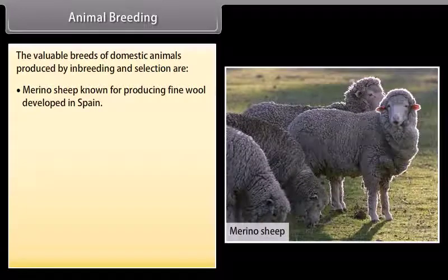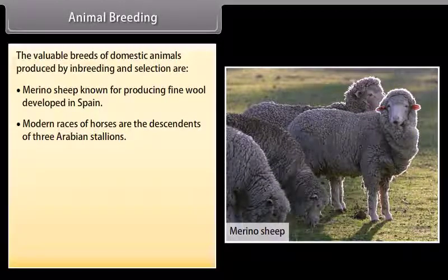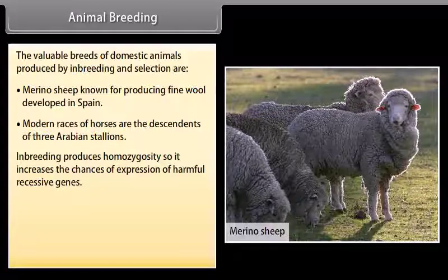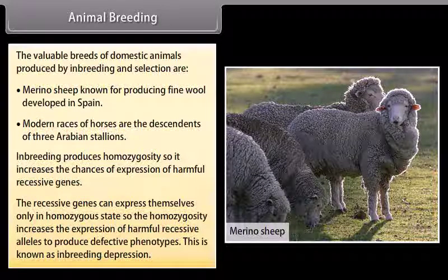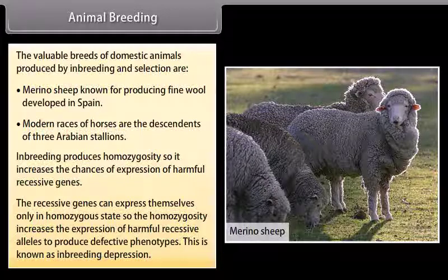The valuable breeds of domestic animals produced by inbreeding and selection include: Number 1, Merino sheep, known for producing fine wool, developed in Spain. Number 2, modern races of horses, descendants of three Arabian stallions. Inbreeding produces homozygosity, increasing the chance of expression of harmful recessive genes. This increases the expression of harmful recessive alleles to produce defective phenotypes — this is known as inbreeding depression.